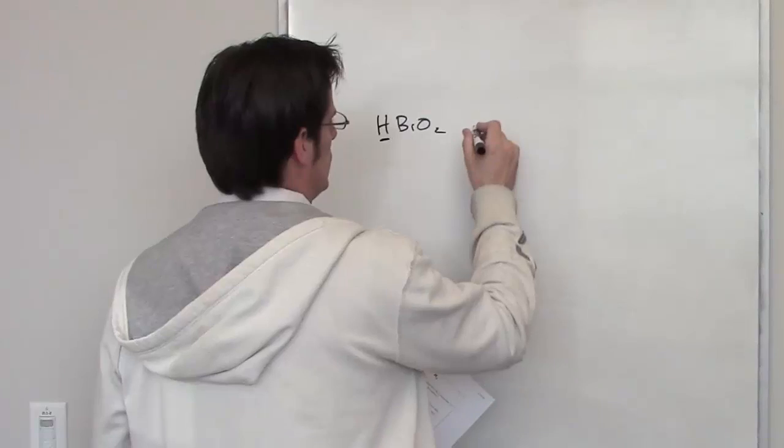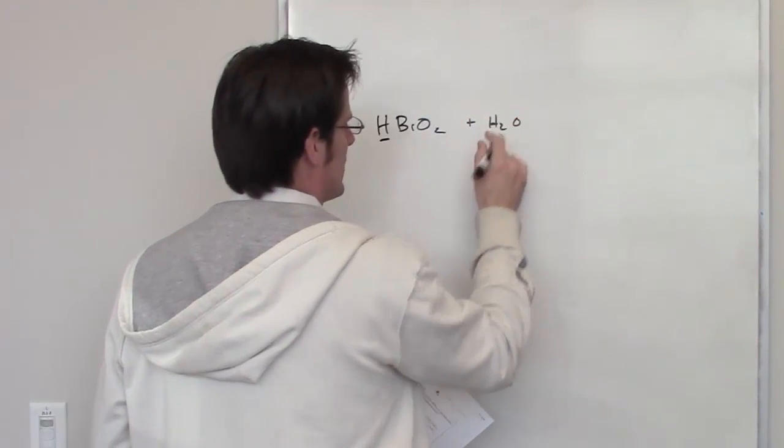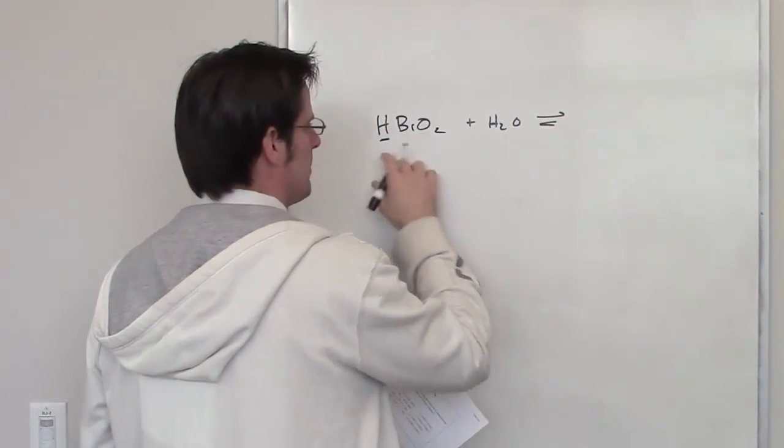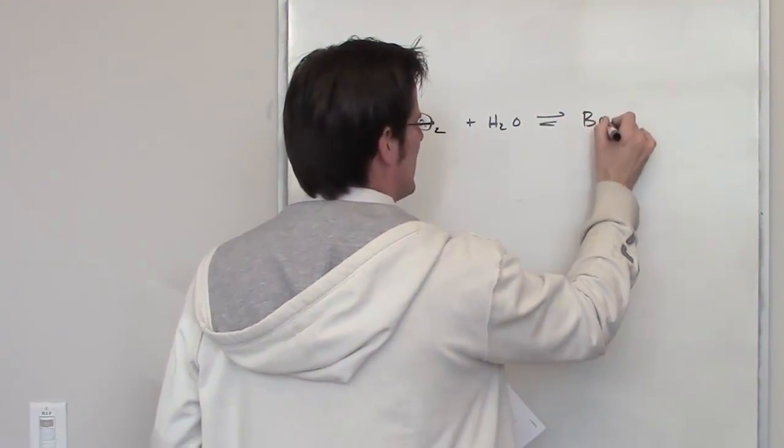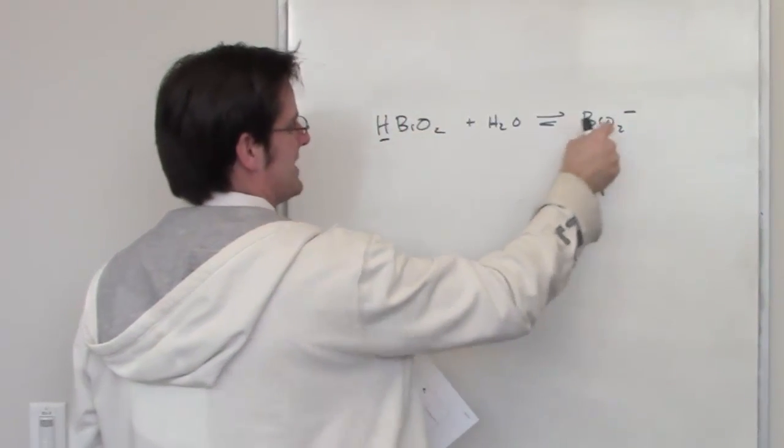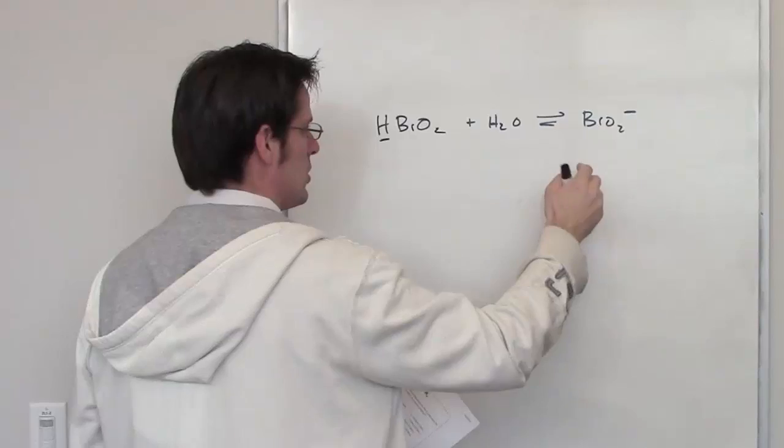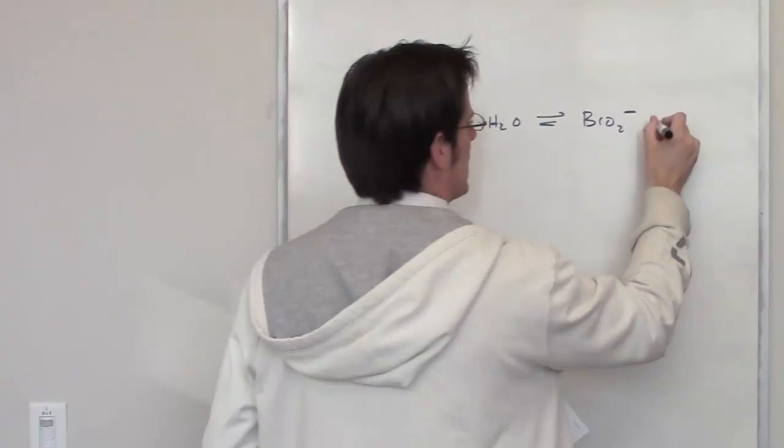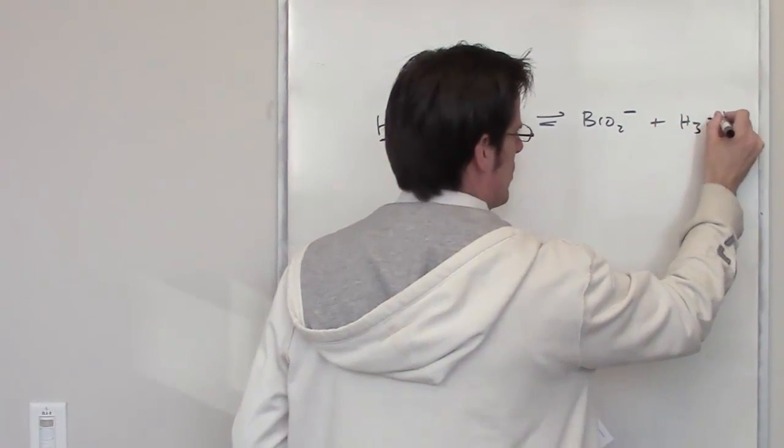In an aqueous solution, it's going to be added with water, and water is going to become the thing that accepts this hydrogen. So I'm going to have an equilibrium setup where this thing becomes BrO2-, it loses this hydrogen, that hydrogen is now gone and gets replaced with a negative charge. This is its conjugate base, and then this thing accepts that hydrogen to become H3O+, known as hydronium.